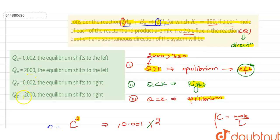So from here we can say that our option second, that is Qc is equal to 2000 and the equilibrium shifts towards the left. I hope you got this concept. Thank you.